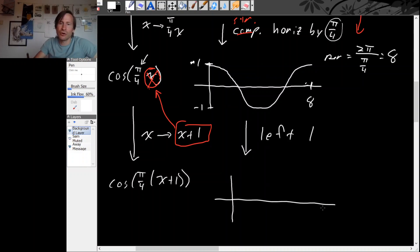So now the beginning of our cosine cycle is instead of being at 0, it's going to be at minus 1. And our end of cycle, instead of being at 8, it's going to be at 7.